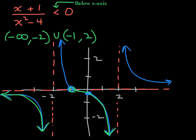All of the hard work is already done because we have the graph. Notice what was the most important part of this graph in order to answer the question: the vertical asymptotes and the x-intercept.